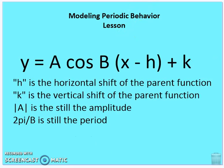Just to reiterate: y equals a times cosine of b times (x minus h) plus k, where h is the horizontal shift, k is the vertical shift, a is the amplitude, and b has a relationship to the period where 2 pi over b equals the period.